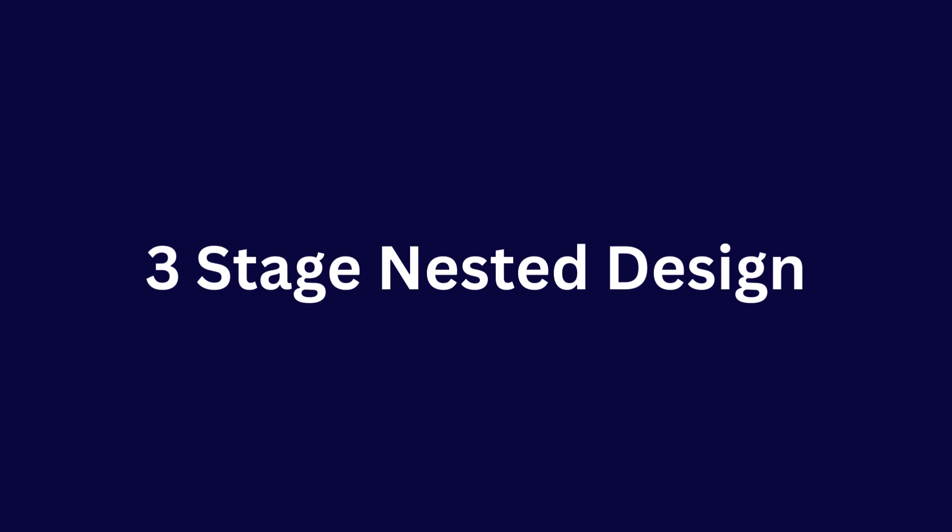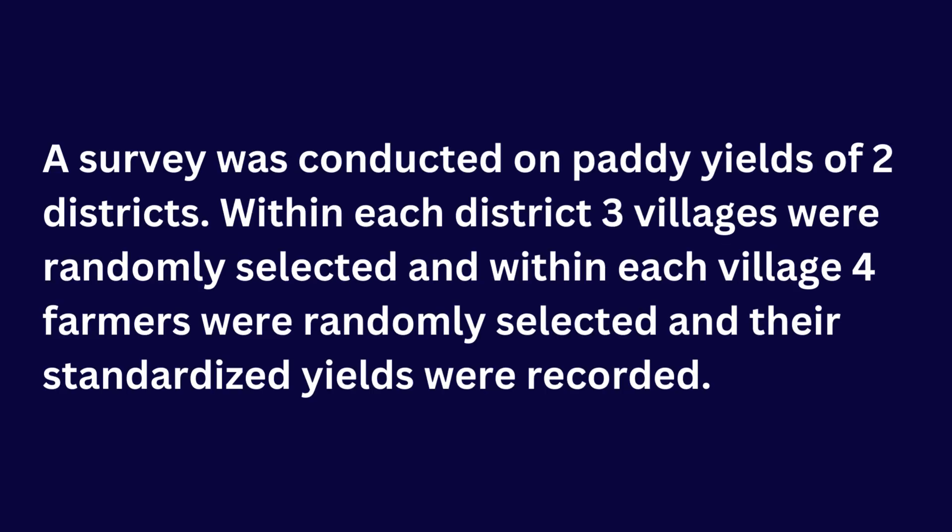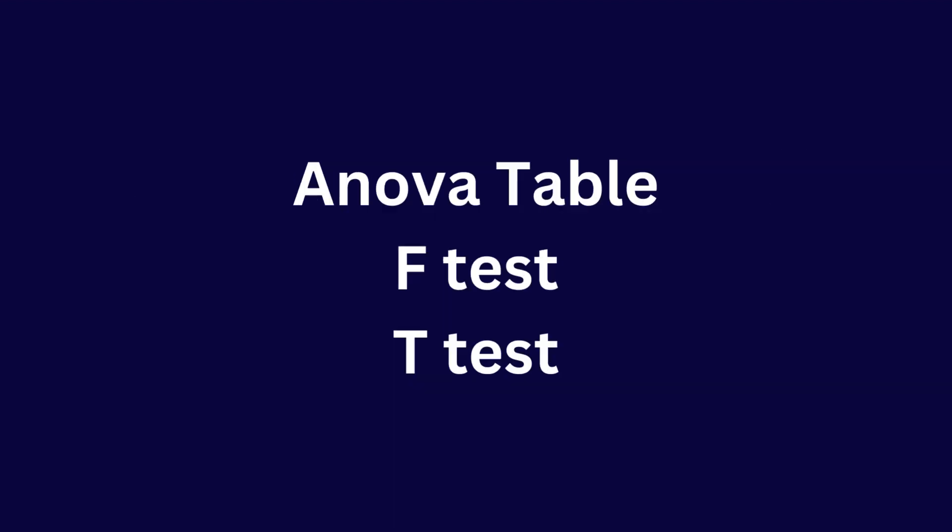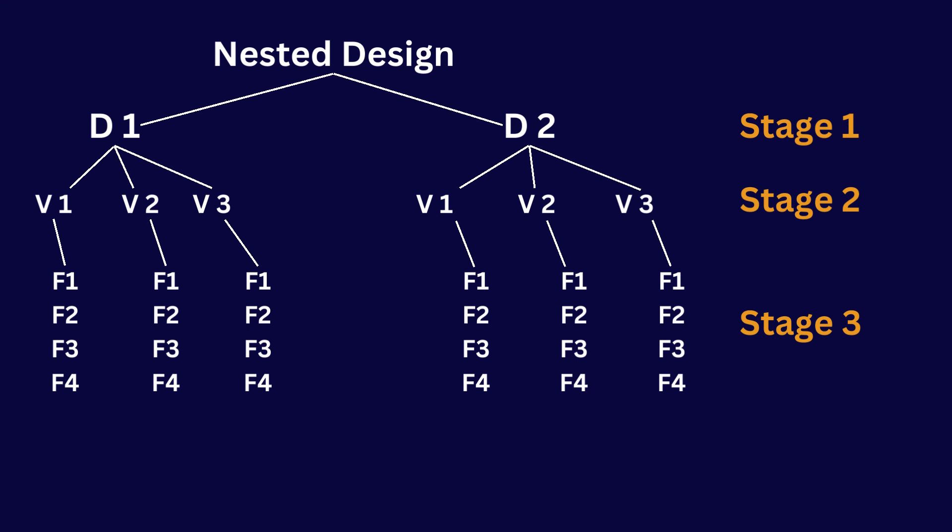Welcome to this session on the three-stage nested design — whether you are a student, a researcher, or just a curious mind, we will break it down step by step. Today's example is a survey on paddy yield of two districts. Within each district, three villages were randomly selected, and within each village four farmers were randomly selected. Our Stage 1 is district, Stage 2 is villages, and Stage 3 is farmer.